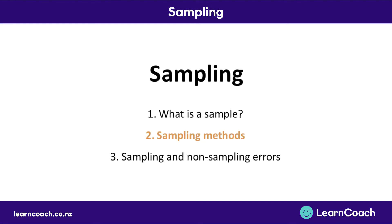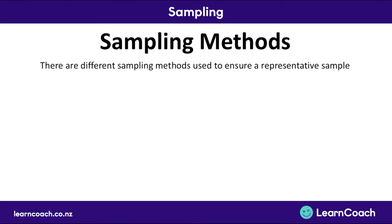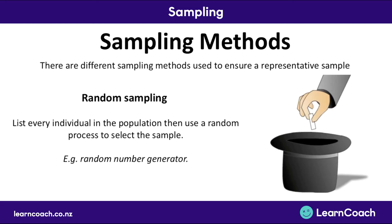Now let's talk about sampling methods. There are different methods to create samples to ensure a representative sample. The first one is random sampling, where there's a list of every individual in the population, then a random process — for example a random number generator — is used to select the sample.